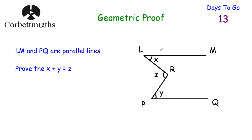Here's our first question. The lines LM and PQ are parallel lines. We've been asked to prove that X plus Y is equal to Z. Feel free to press pause now and prove that. So in terms of this question, we want to show that X plus Y is equal to Z. Now we've got parallel lines, which means that we may have alternate or corresponding angles.